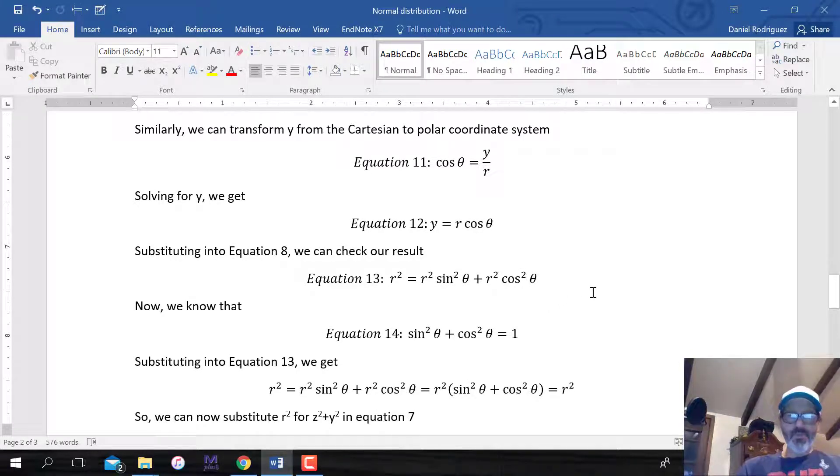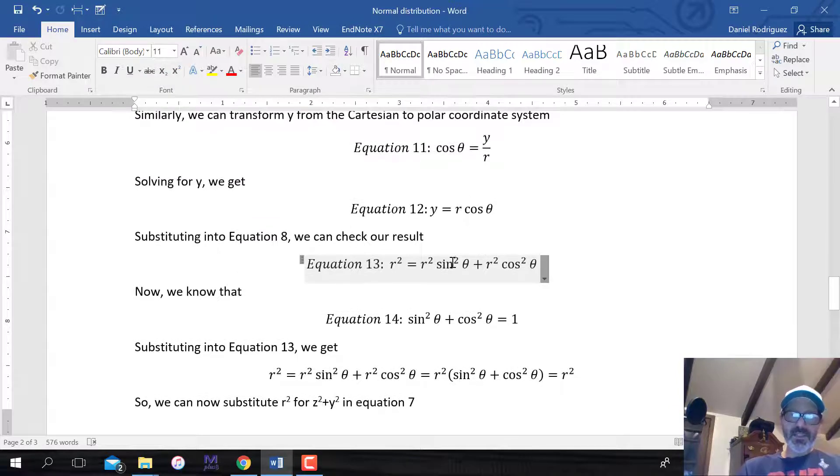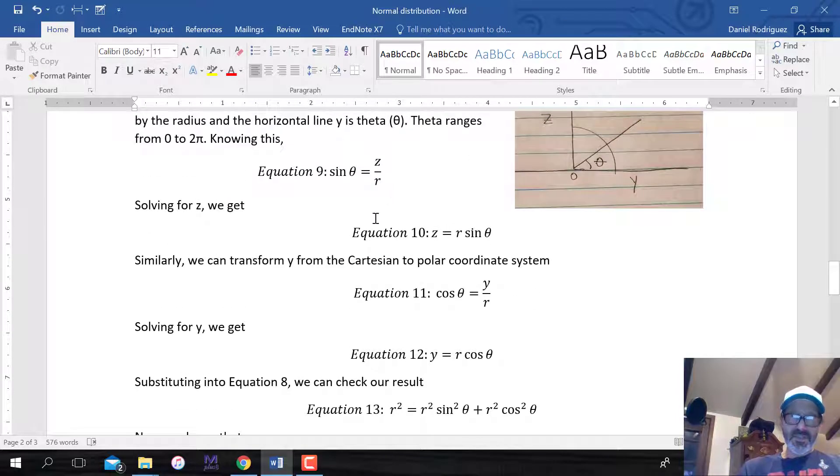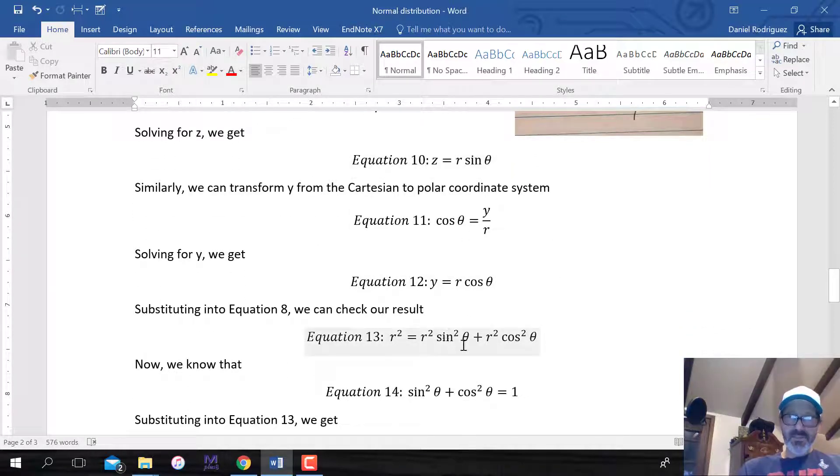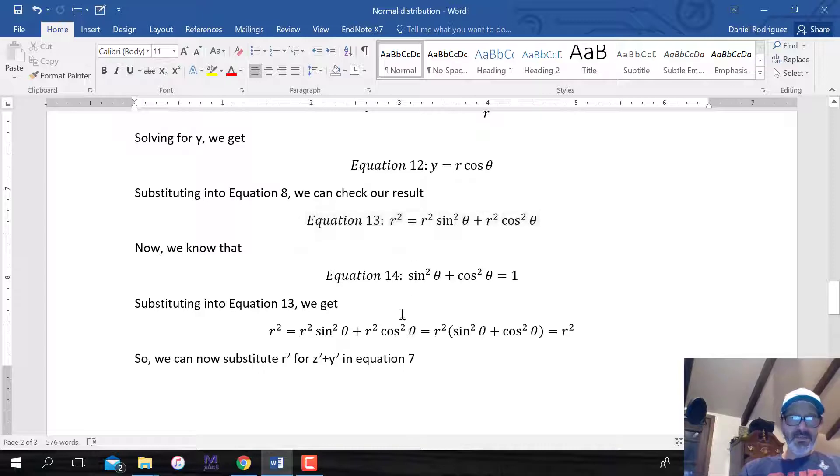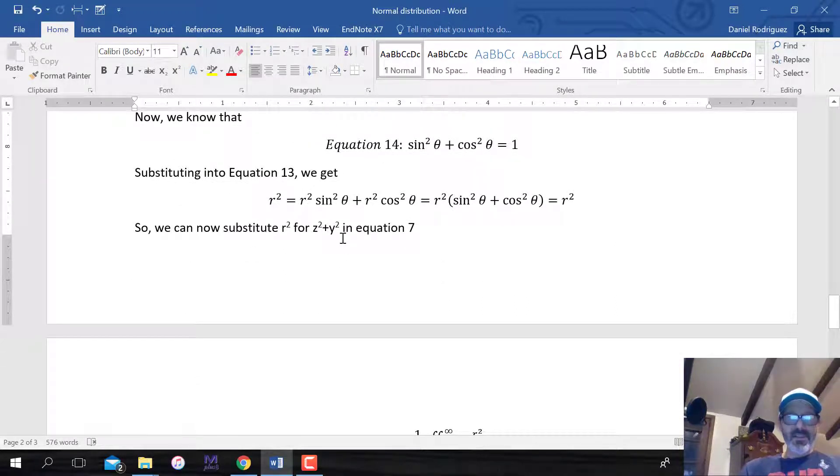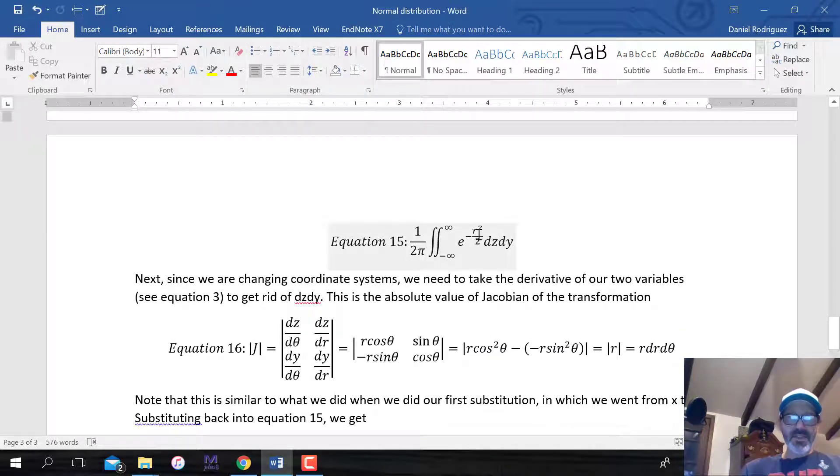There's some knowns that we have here. We know that the sine of theta is the opposite divided by the hypotenuse. So this would be z divided by r, the radius. We can solve for z because we want to eliminate z and get into polar coordinates. So z equals r sine theta. We can do the same for eliminating the y. The cosine of theta is the adjacent line divided by the hypotenuse, y divided by r. So we get equation 12, solving for y, we get r cosine theta.